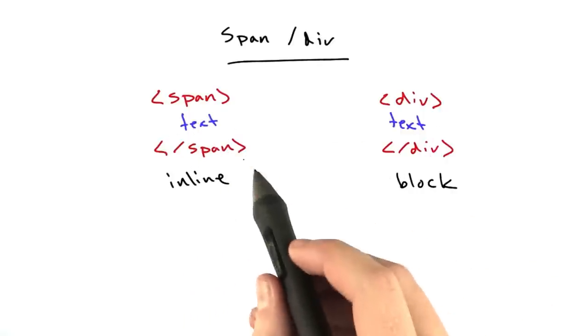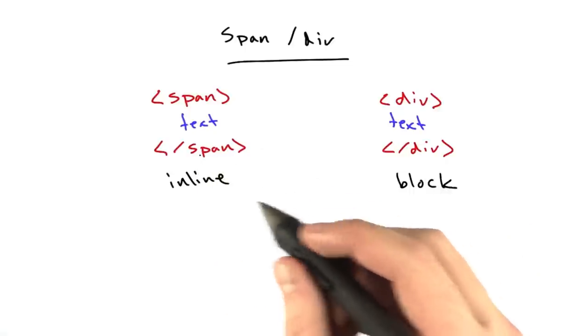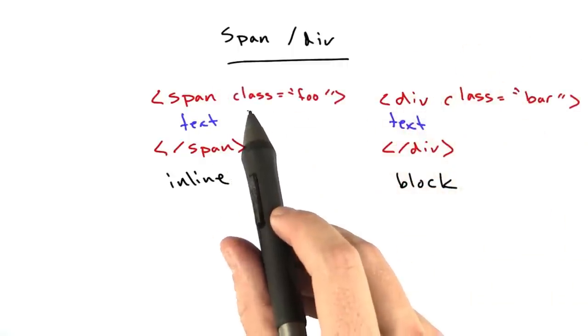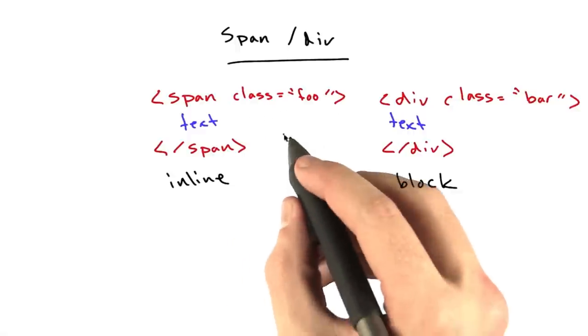There's a way to attach styles to them to adjust different behaviors of how they display. That looks something like this. You can see I've added an attribute to each of these called class, and this is a CSS class.